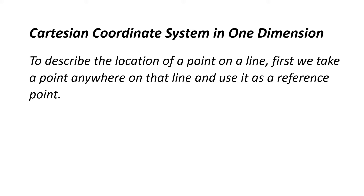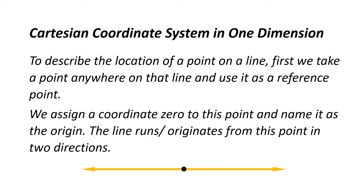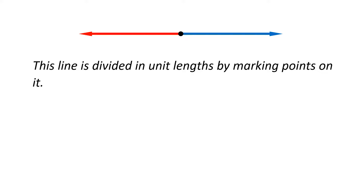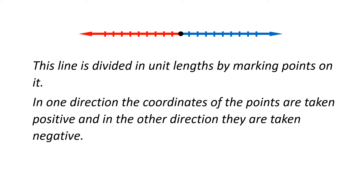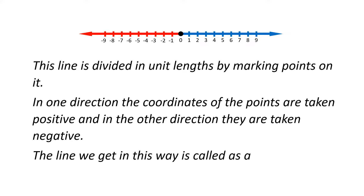Cartesian coordinate system in one dimension: to describe the location of a point on a line, first we take a point anywhere on that line and use it as a reference point. We assign a coordinate zero to this point and name it as the origin. The line originates from this point in two directions and is divided in unit lengths. In one direction the coordinates are taken positive and in the other direction they are taken negative. The line we get in this way is called a number line.